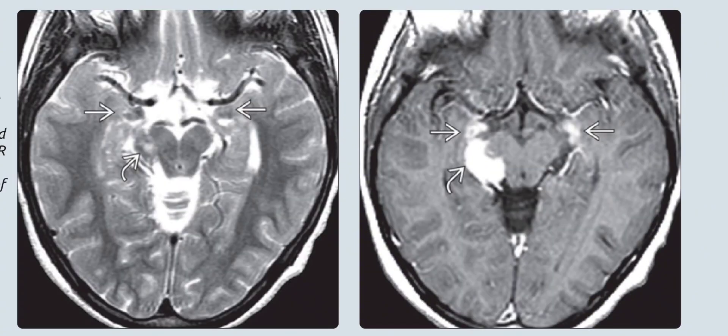On the left is the axial T2-weighted MRI in the same patient, revealing T2 shortening — hypointense signal — of the mass lesions in the amygdala and ambient cistern. Note that the abnormal signals are more difficult to see on T2-weighted images. On the right is the axial T1 contrast-enhanced MRI, demonstrating enhancement of the leptomeningeal lesion. The parenchymal lesions do not enhance and are actually slightly less conspicuous following contrast injection.